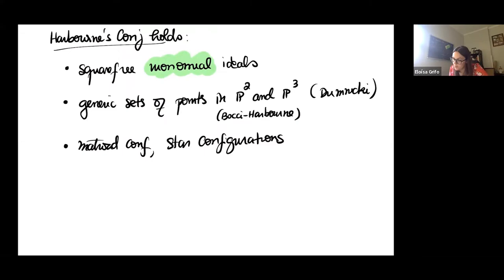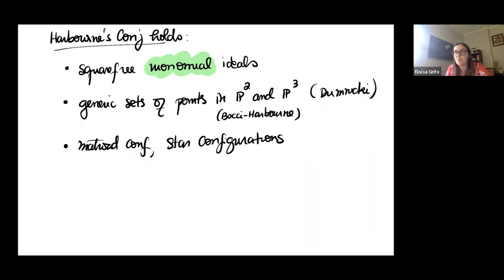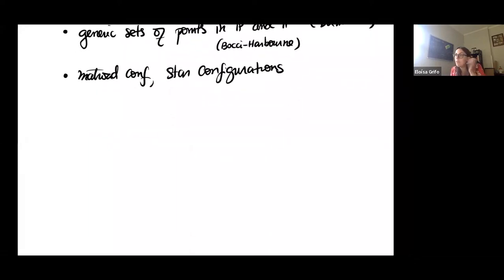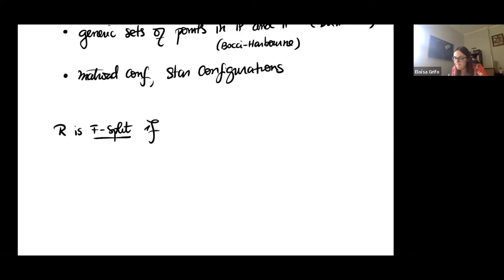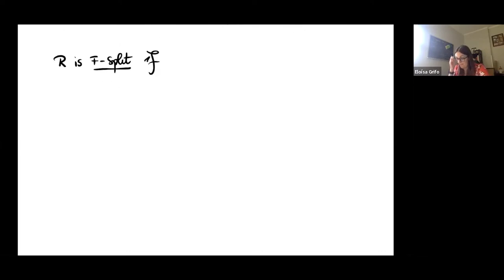Today we'll prove what I think of as a generalization of the monomial case. This is a philosophy I learned from Luis Nunez-Betancourt: whenever you see a theorem true for monomial ideals, ask whether it's true for ideals defining F-pure rings. Most of the time the version for ideals defining F-pure rings makes sense — it's a large class of ideals in characteristic p that contains the class of square-free monomials.